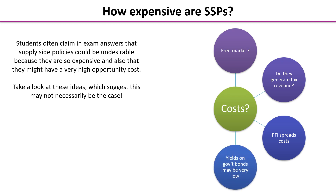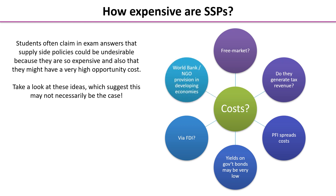The fourth point is thinking about yields on government bonds. If yields are very low, then the cost of servicing the borrowing needed to pay for a supply side policy may actually be quite low — not a particularly large burden for government to bear. There may also be other sources for paying for it, such as FDI — foreign direct investment — where overseas investors are encouraged to build infrastructure, saving the government from finding the money itself. Finally, for developing economies, provision may be available from the World Bank or an NGO, enabling international agencies to assist with the cost of implementing supply side policies.